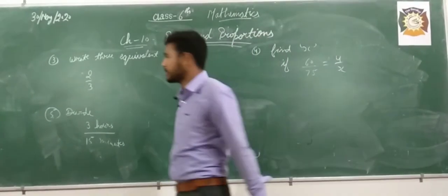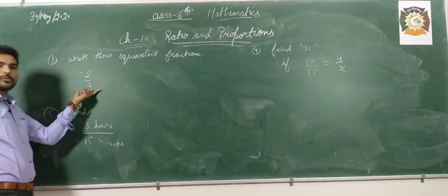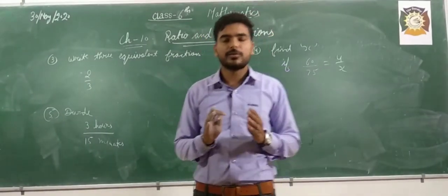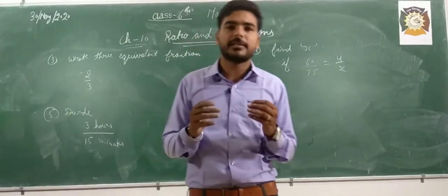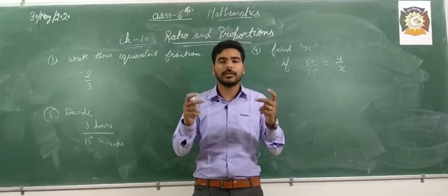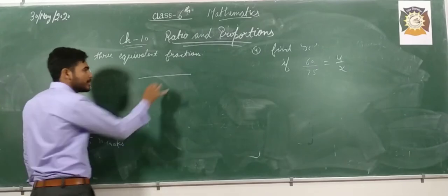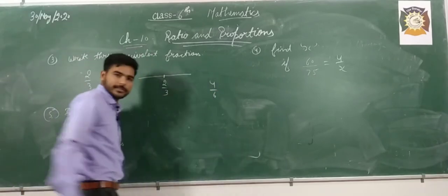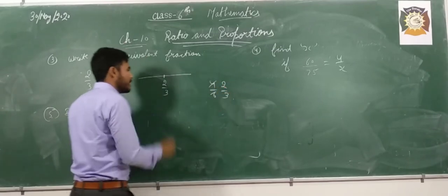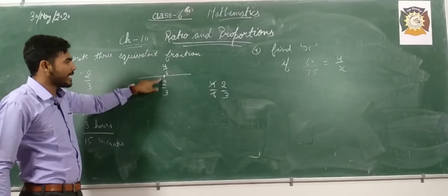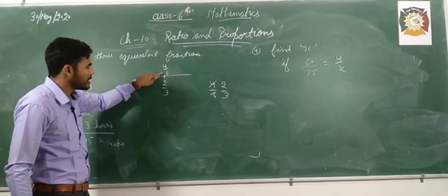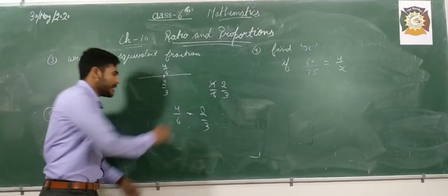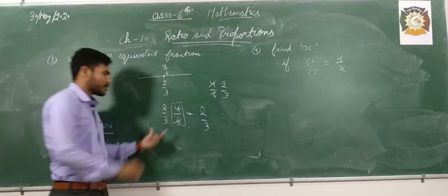The next example: write the equivalent fractions of 2 by 3. First, you need to know what equivalent fractions are. Equivalent fractions are fractions which lie on the same point on the number line. For example, 2 by 3 and 4 by 6 are equivalent because 4 by 6 in its simplest form equals 2 by 3. So 4 by 6 is equal to 2 by 3 — they are equivalent fractions.